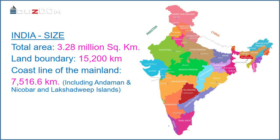It is about 2.4% of the total geographical area of the world. India has a land boundary of about 15,200 kilometers, and the total length of the coastline of the mainland is 7,516.6 kilometers, including the Andaman and Nicobar and Lakshadweep Islands.